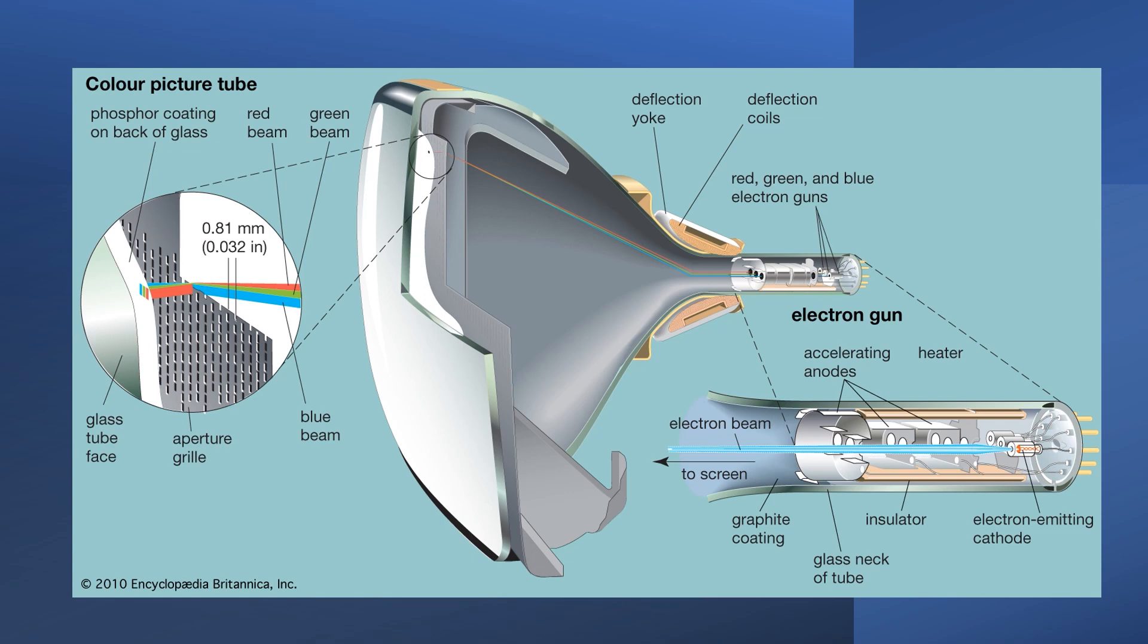To understand how color works, let's look at the cathode ray tube again. In a color CRT, there are actually three electron guns, one for red, green, and blue. And then the front of the screen actually contains a mask with three different types of phosphor, and they'll glow either red, green, or blue when hit by an electron.